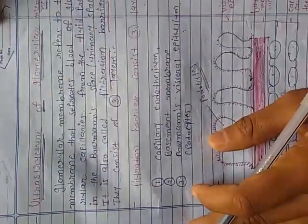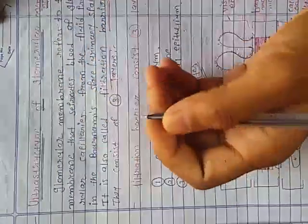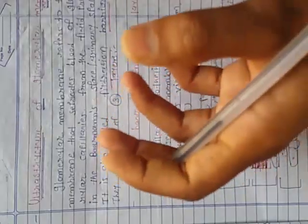Why do we talk about the ultrastructure of the glomerular membrane? Because it is essential for urine formation.